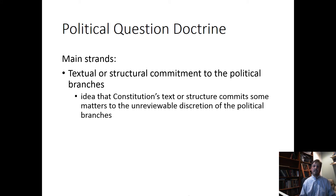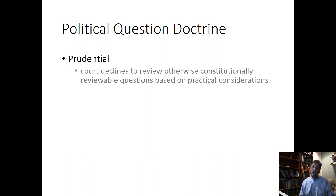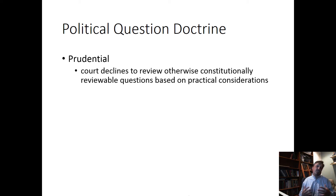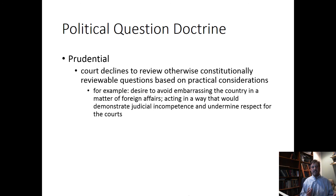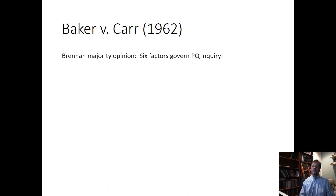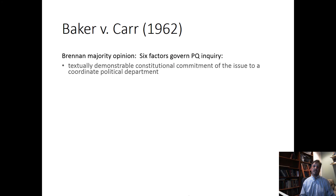The more common strand is prudential. In a prudential case, the court is saying that although the court could hear it, although the literal text of the Constitution would suggest this is something a court could hear, we're not going to hear it. Things that often fall in this category include foreign relations and matters where the court really doesn't have the competence to decide the issue — where some other branch of government might have more competence. We looked at Baker v. Carr, and Brennan's opinion in Baker v. Carr gives us a six-factor test we can use to determine whether something is a political question.